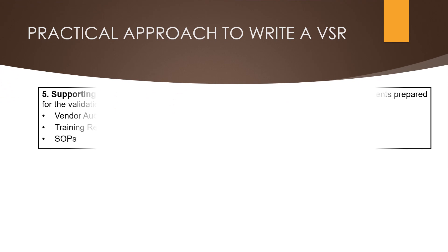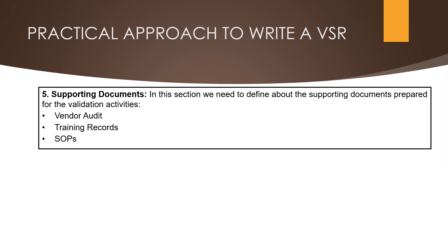The fifth component of the validation summary report is the supporting documents section. Here we need to define about the supporting documents prepared for the validation activities. For example, details of the vendor audit report — that is audit performed date, report approval date, any observations during the audit, action taken, and a conclusion statement. Next is training records — here we need to define about the personnel involved in the whole validation activities, such as creation, execution, review, and approval of validation documents, and that those personnel are trained.